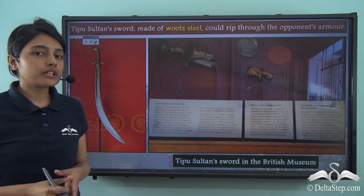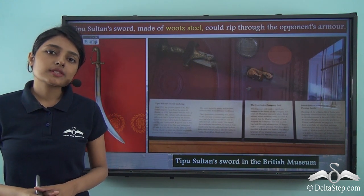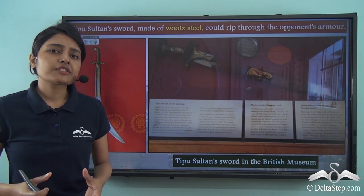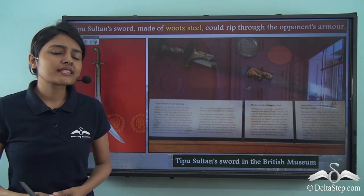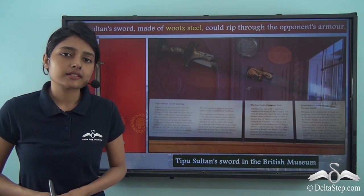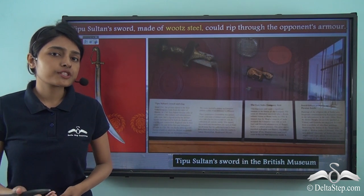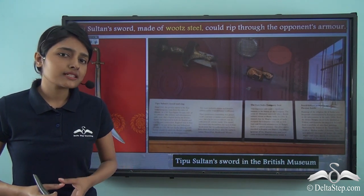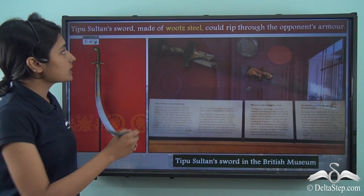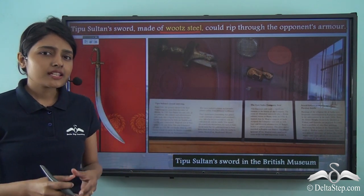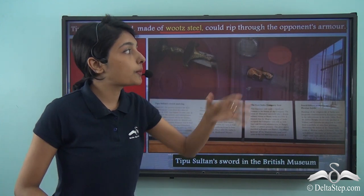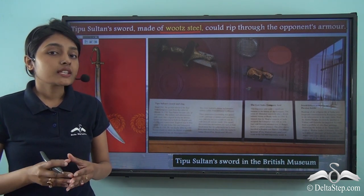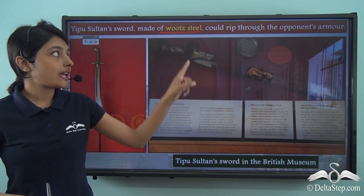What you see on the screen is Tipu Sultan's famous sword. Tipu Sultan was the ruler of Mysore till 1799 when he lost his life in the Anglo-Mysore war. He was a very brave and valiant ruler who fought single-handedly against the Britishers to protect his territory. His sword was made of wootz steel, and it was so powerful that it could rip through the opponent's armour.